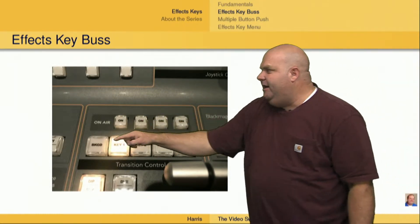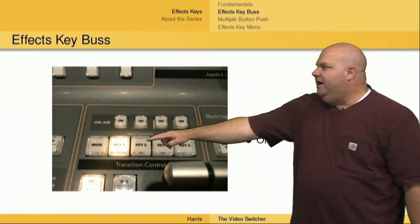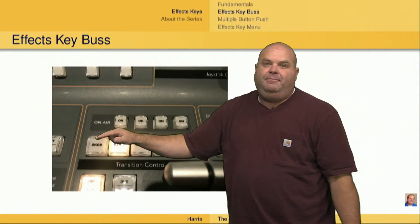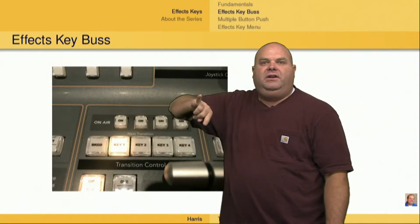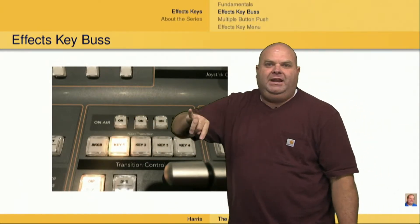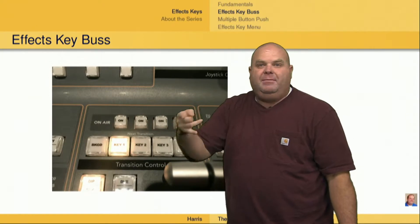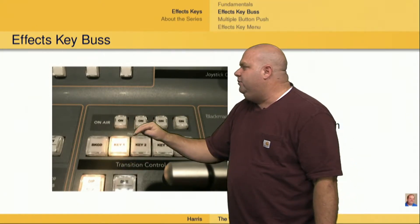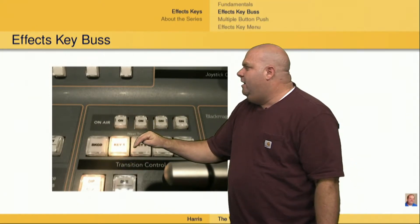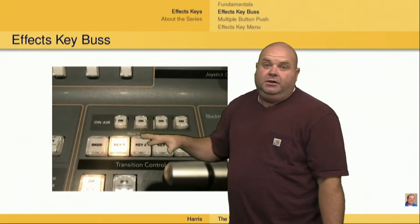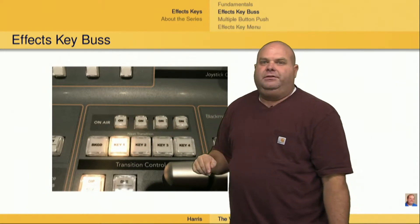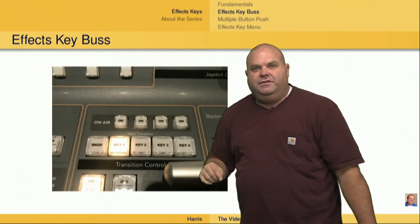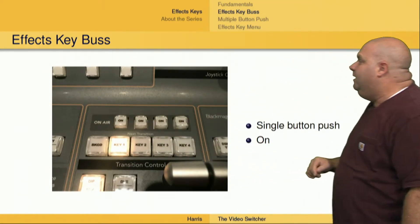Right here we've got the effects key bus. We've got the transition control area. Right here we normally have the background where we're going to flip-flop between the program and preview bus, but we do have the ability in our transition control to select one of two keyers on this particular switcher. You may have three or four keyers depending on the switcher that you're using.